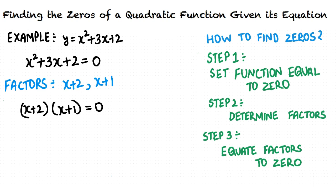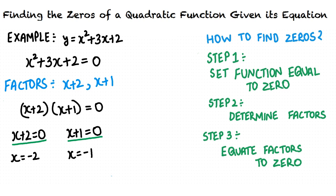The equation now becomes x plus 2 times x plus 1 equals zero. When the product of two numbers equals zero, either of them must be zero. Applying this concept, we get x plus 2 equals zero and x plus 1 equals zero. From x plus 2 equals zero, we get x equals negative 2. And from x plus 1 equals zero, we get x equals negative 1.